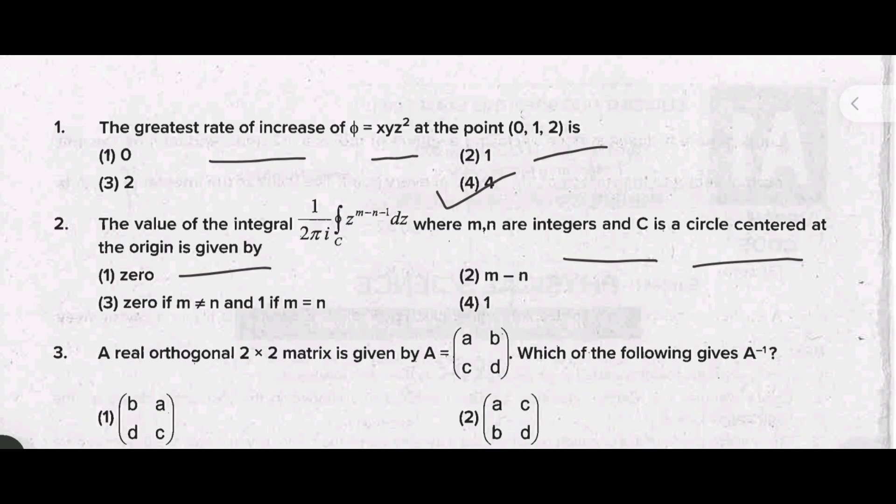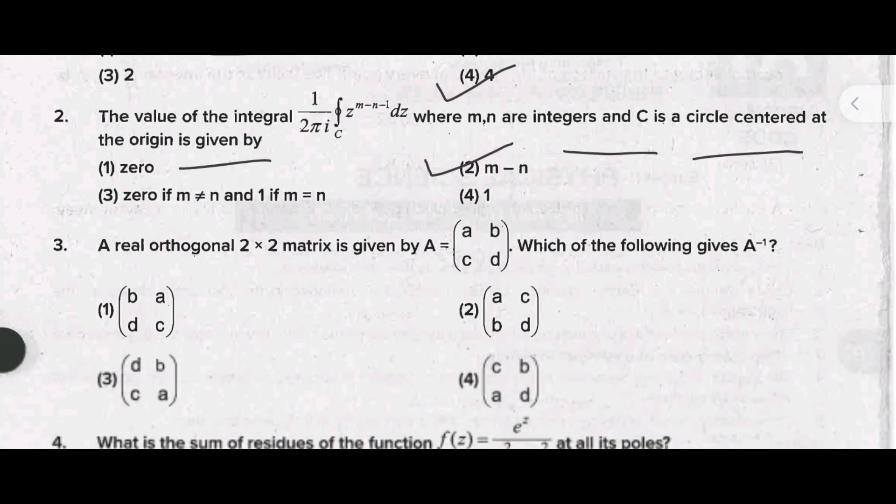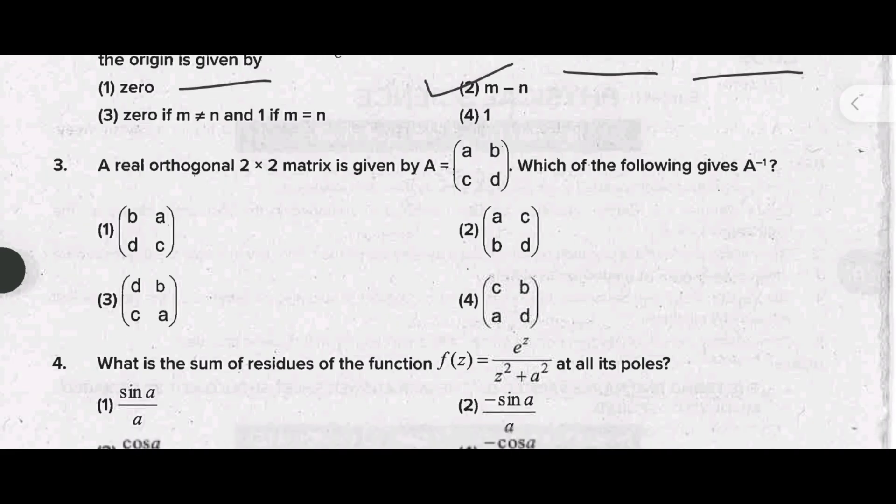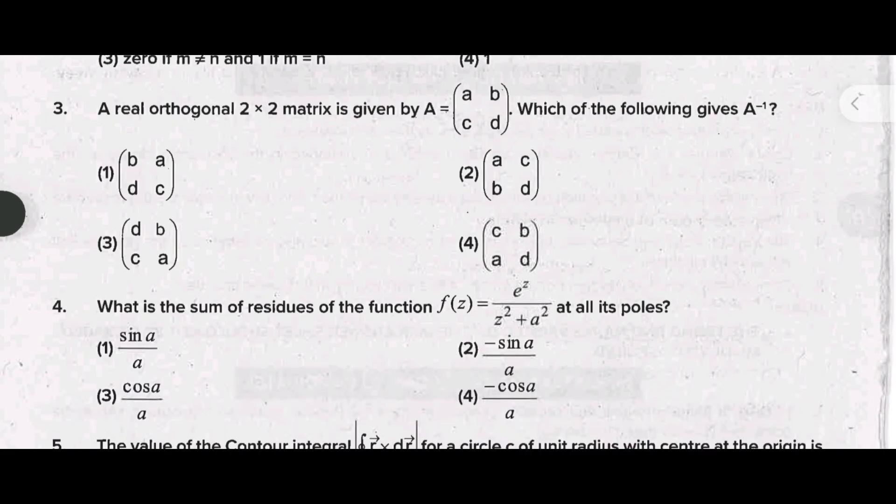Third one is: a real orthogonal 2 into 2 matrix is given by matrix A equal to ABCD. Which of the following gives A inverse, means reverse of matrix A? The suitable answer is option 2, is the right answer.